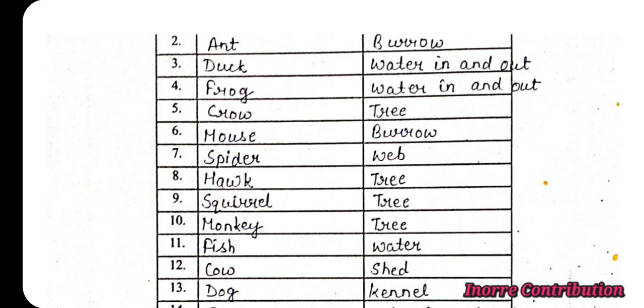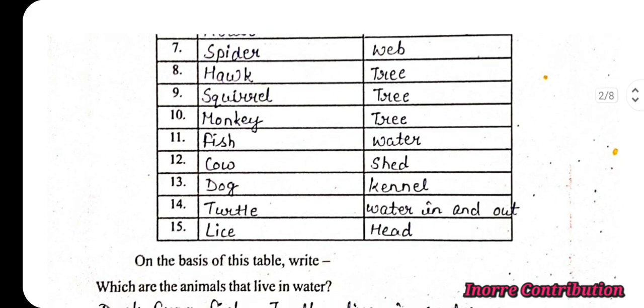Cow lives in a shed. Dog lives in a kennel. Turtle lives both in water and on land. Lice live on the head.